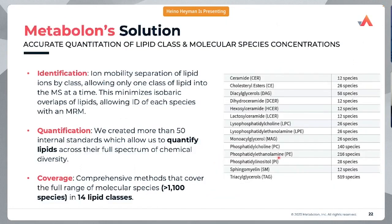Metabolon's solution: we developed a platform using ion mobility separation to separate lipid ions based on classes, allowing only one class of lipids into the mass spec at a time. We then do the speciation, and made it quantitative by including 50 internal standards with each analysis. This allows us to quantify lipids across the full spectrum and chemical diversity — not only across classes but also within classes — achieving comprehensive coverage of 1,100 lipid species across 14 lipid classes.